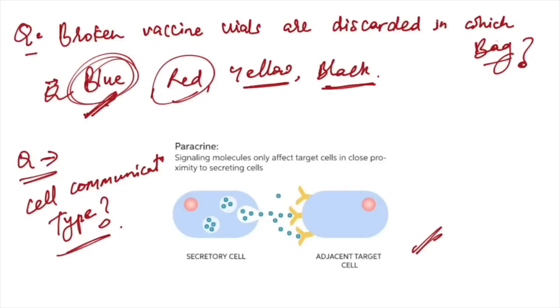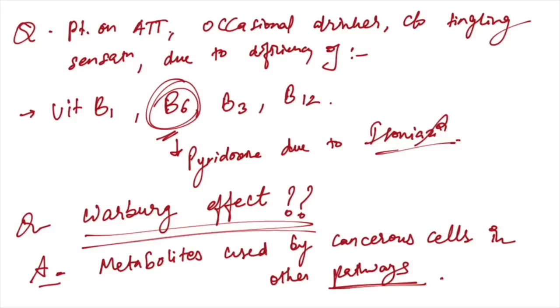Cell communication types: this diagram was given, this is paracrine communication because signaling molecules only affect target cells in close proximity to secreting cells. Patient on ATT as occasional drinker complaining of tingling sensation - it is due to deficiency of vitamin B6 because isoniazid causes deficiency of vitamin B6, pyridoxine.